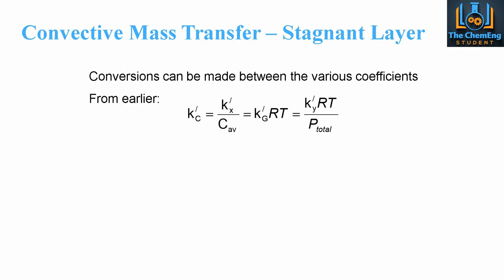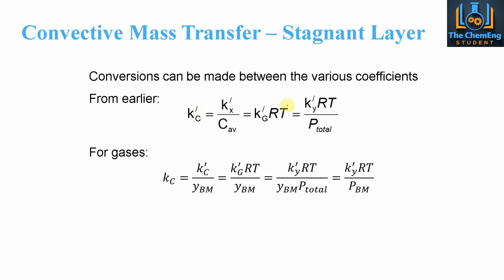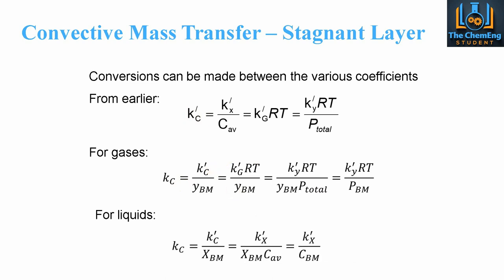Conversions can also be made between the various coefficients themselves. We have the base relationship from earlier; for gases, we incorporate the corrected factors to obtain those relationships; and for liquids, the analogous system applies. Depending on the information available, you can always convert between coefficients to solve any convective mass transfer problem. This video — or the corresponding course material — serves as a useful reference to ensure you can solve your system regardless of which piece of information is given.